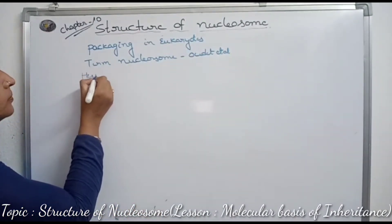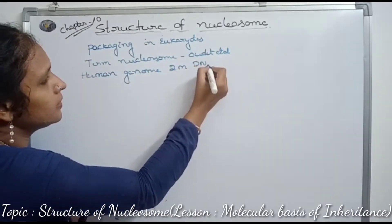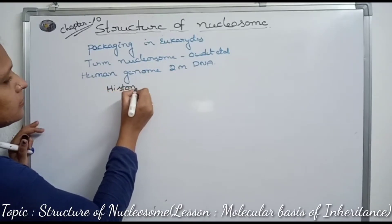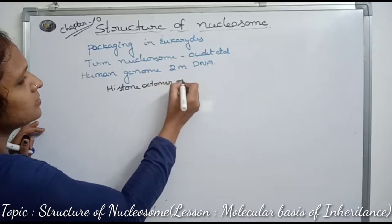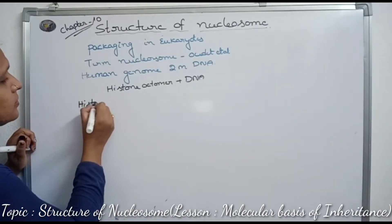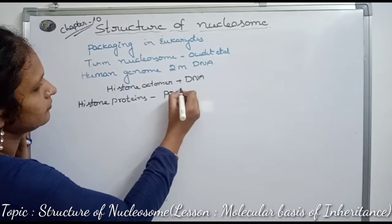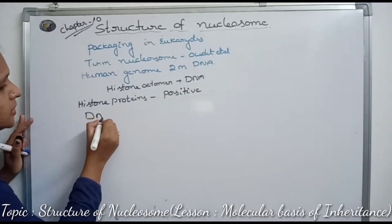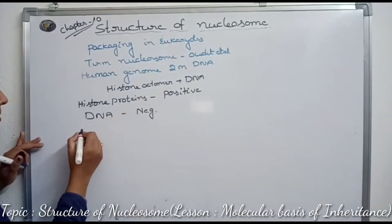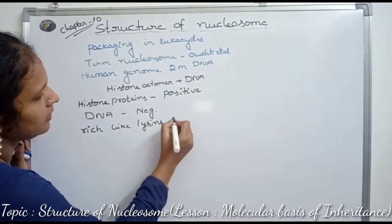Nucleosome means histone octamer plus DNA. The histone protein is positively charged, and the DNA is negatively charged. The basic histone proteins are four types, rich in amino acids like lysine and arginine.